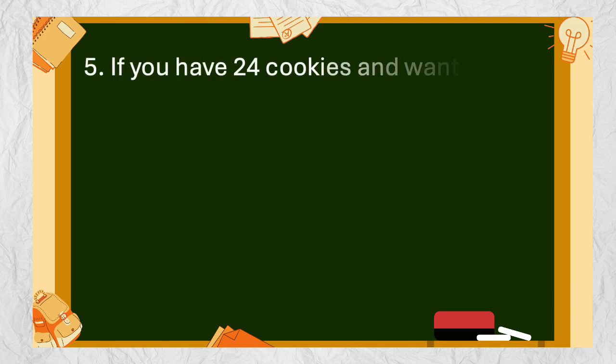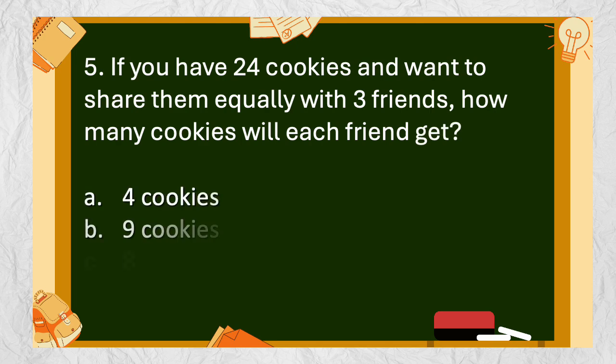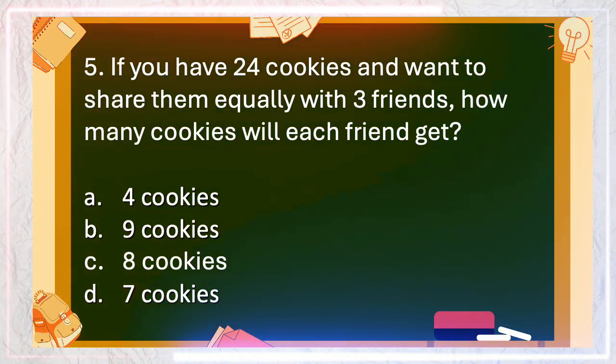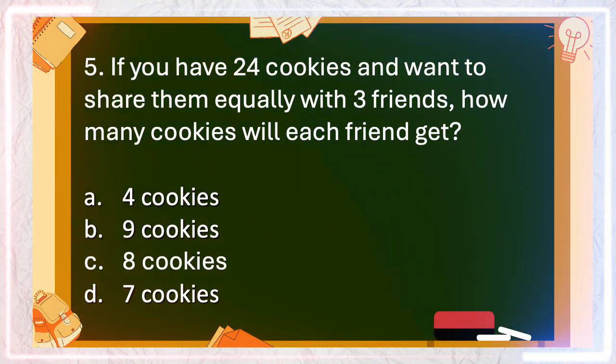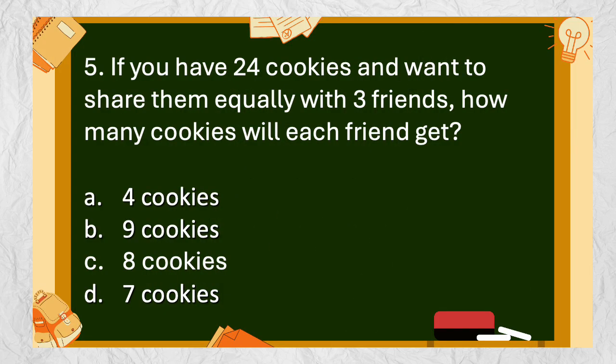Number 5: If you have 24 cookies and want to share them equally with 3 friends, how many cookies will each friend get? A. 4 cookies, B. 9 cookies, C. 8 cookies, D. 7 cookies. The answer is C. 8 cookies.